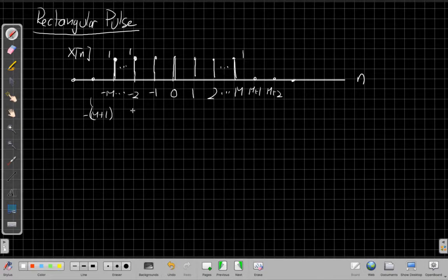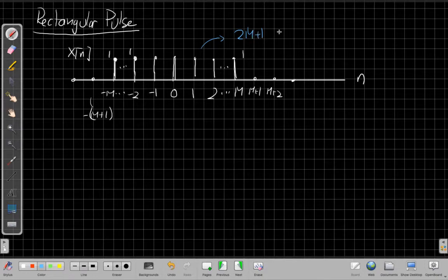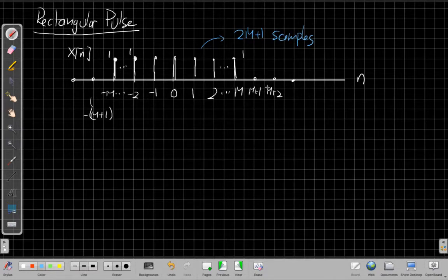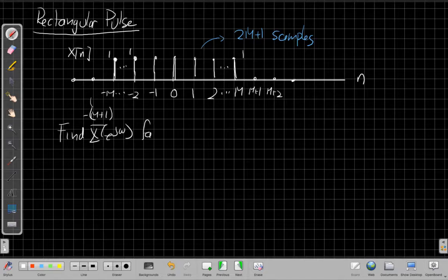So it's 1 for a total of 2M plus 1 samples where it's not 0. And then it goes back to being 0, and it does this in a way that's symmetric on the origin. And so the question is, what we want to do in this problem is find X of e to the jω for this signal.